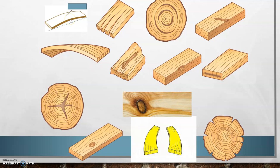Here we've got bowing. This is a splay knot because it's splayed out — it could also be called an aris knot. The next couple of tasks you're going to be doing, you're going to find out all about these defects.